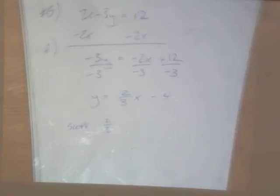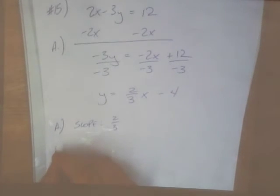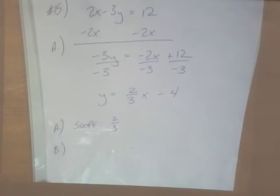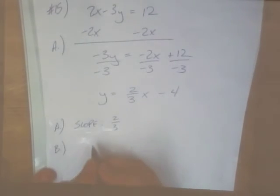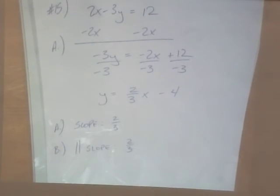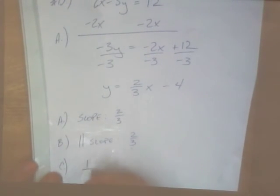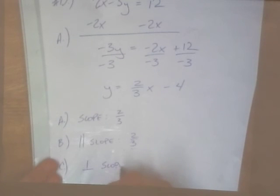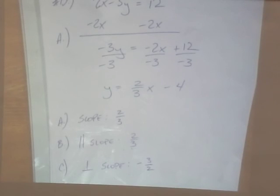Alright, part B, they want to know what's the slope. This is A. What's the slope of a line that's parallel to this line? 2 thirds. Parallel slope would be 2 thirds. What's the slope of a line that's perpendicular to this one? Negative 3 halves. It would be negative 3 halves. The opposite reciprocal. Change the sign and flip the fraction. Questions on 15?